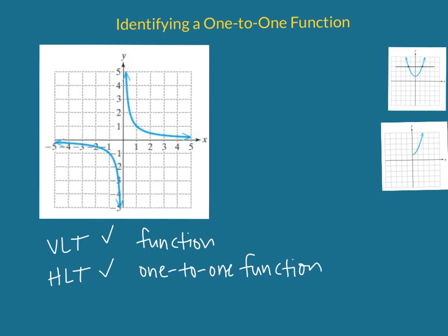And that's how you visually tell if the graph of a relation is a one-to-one function.